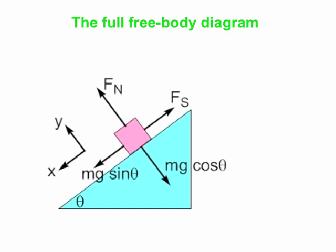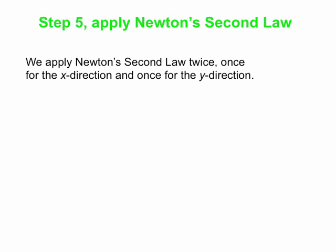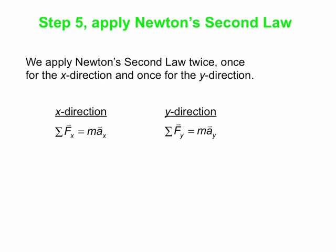Now we apply Newton's second law. We apply it twice — once for the x direction and once for the y direction. In any two-dimensional situation, for the x direction: the sum of all forces in x equals mass times acceleration in x. Same for the y direction: the sum of all forces in y equals mass times acceleration in y. To evaluate the left-hand side of each equation, we look at the forces in their x and y components on the free body diagram.